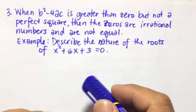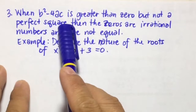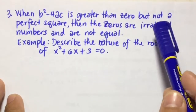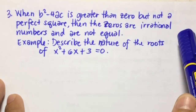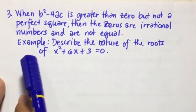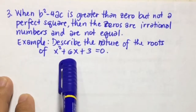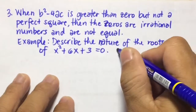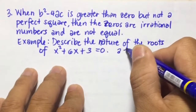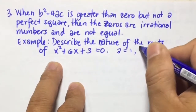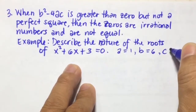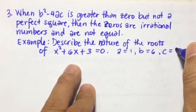Number 3: when b squared minus 4ac is greater than 0 but not a perfect square, then the zeros are irrational numbers and are not equal. For example, describe the nature of the roots of x squared plus 6x plus 3 equals 0. So a, the numerical coefficient of x squared, is 1; b, the numerical coefficient of x, is 6; and c, the constant term, is 3.